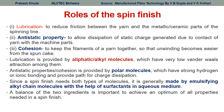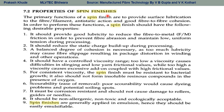Lubrication can be provided by aliphatic or alkyl molecules which have low van der Waals forces. Anti-static properties are provided by polar molecules with strong hydrogen or ionic bonding. Spin finish needs both types of molecules and is generally made by emulsifying alkyl molecules with the help of surfactants. A balance between these two components — aliphatic or alkyl molecules and polar molecules — is required to provide surface lubrication, anti-static property, and good fiber-to-fiber cohesion.